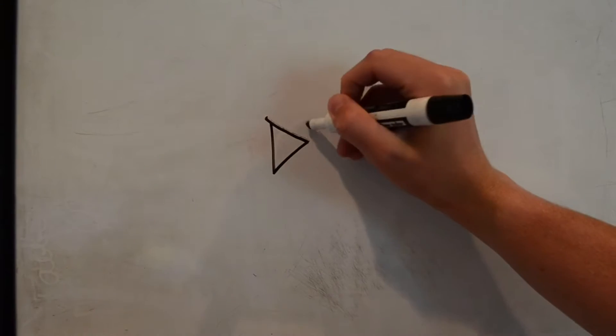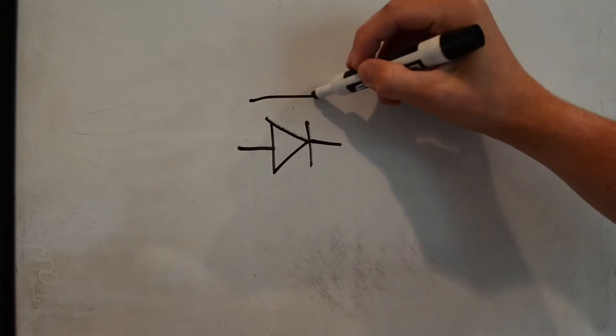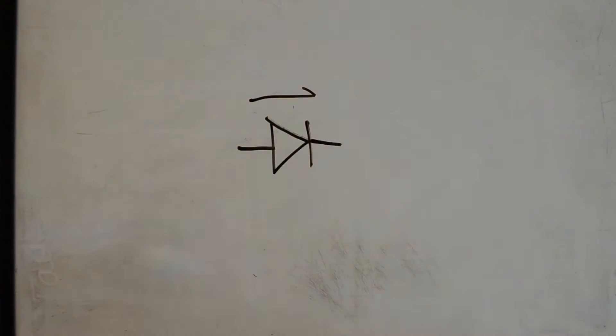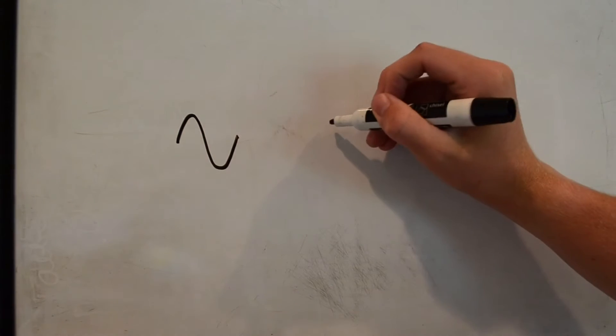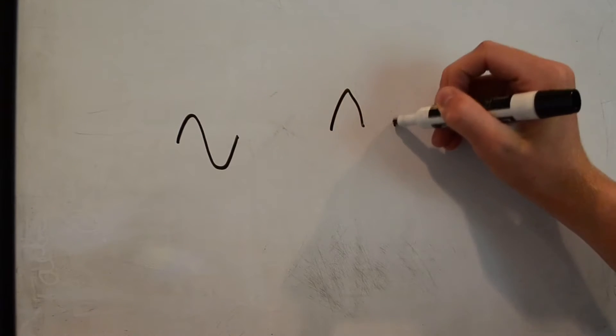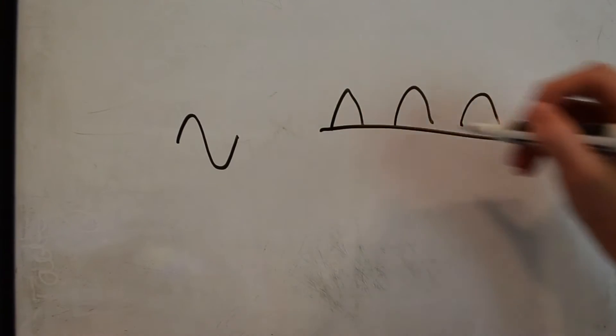This is the symbol for a diode. A diode only allows current to flow in one direction, from the anode to the cathode. So if we were to apply alternating current to a diode, every positive cycle would give us voltage across it, and it would end up looking like this.